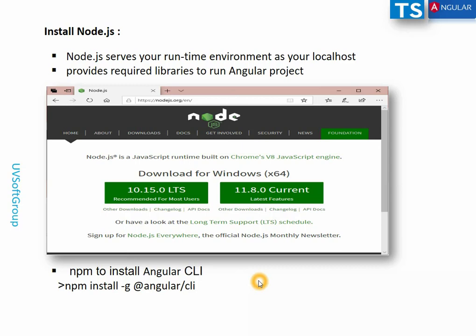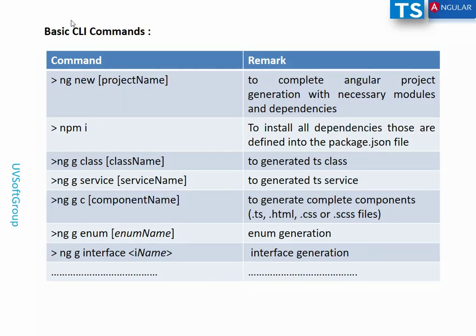You need the Angular CLI, then npm, the package manager, to install the Angular CLI. Once Node.js is installed, just run the command: `npm install -g @angular/cli`. That installs the Angular CLI. These are the basic CLI commands when you start a project.